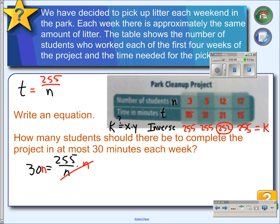Then we divide by 30, and we get n equals 255 divided by 30, which is 8.5. So, if we want to complete the job in no more than 30 minutes, we're going to need 9 people.